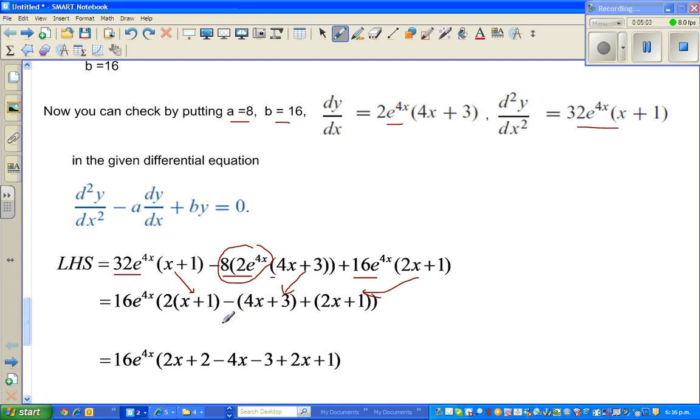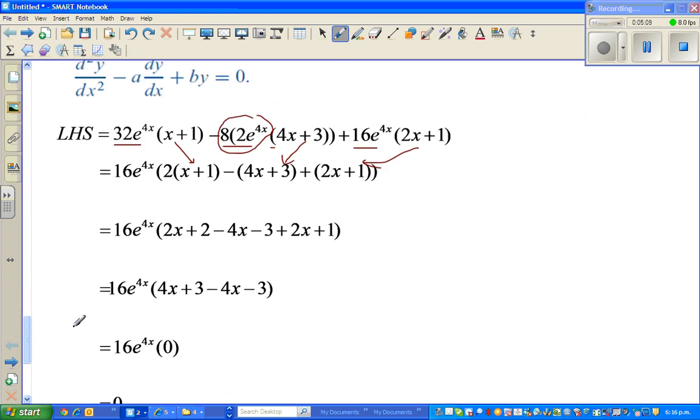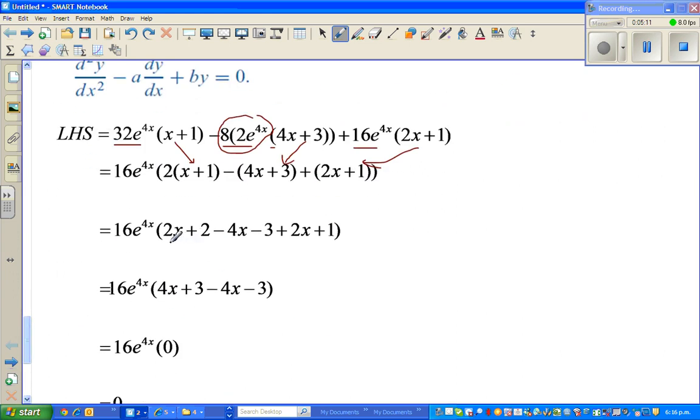Now I'll just open the bracket, which is 2x + 2 - 4x - 3 + 2x + 1. Which is again simplifying: 2x + 2x is 4x, 1 plus—sorry, 2 plus 1 is 3—and this is -4x - 3.